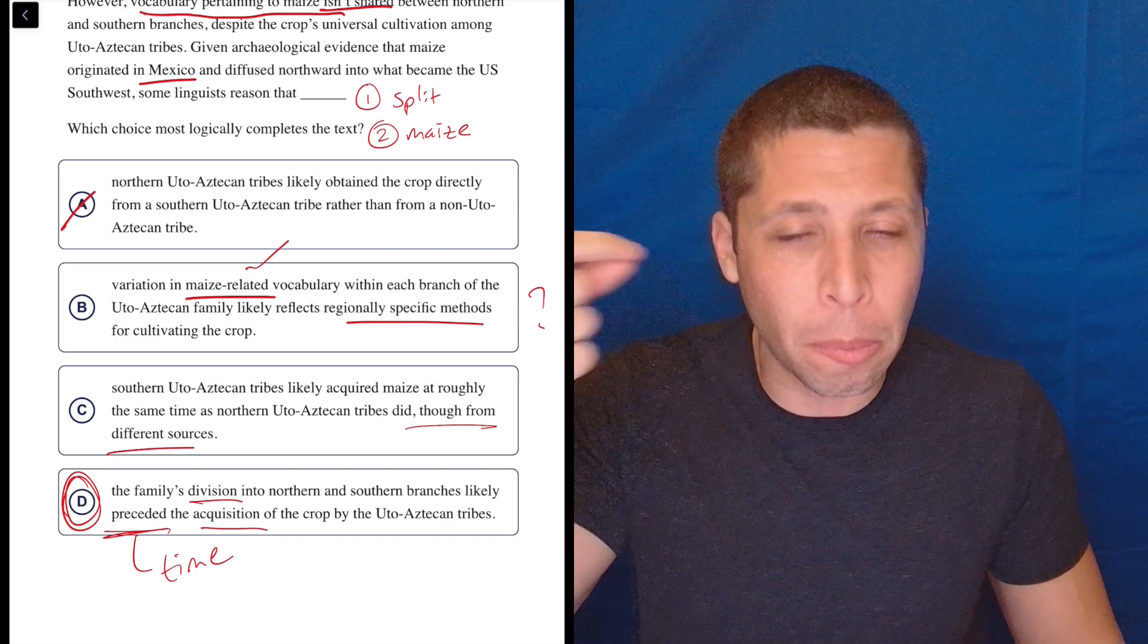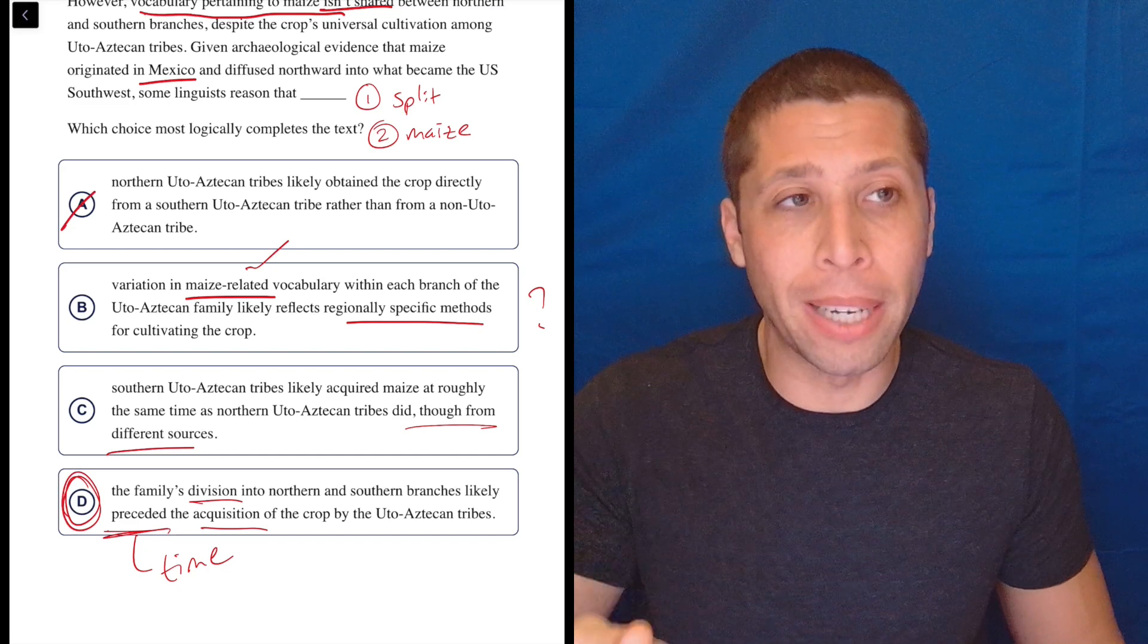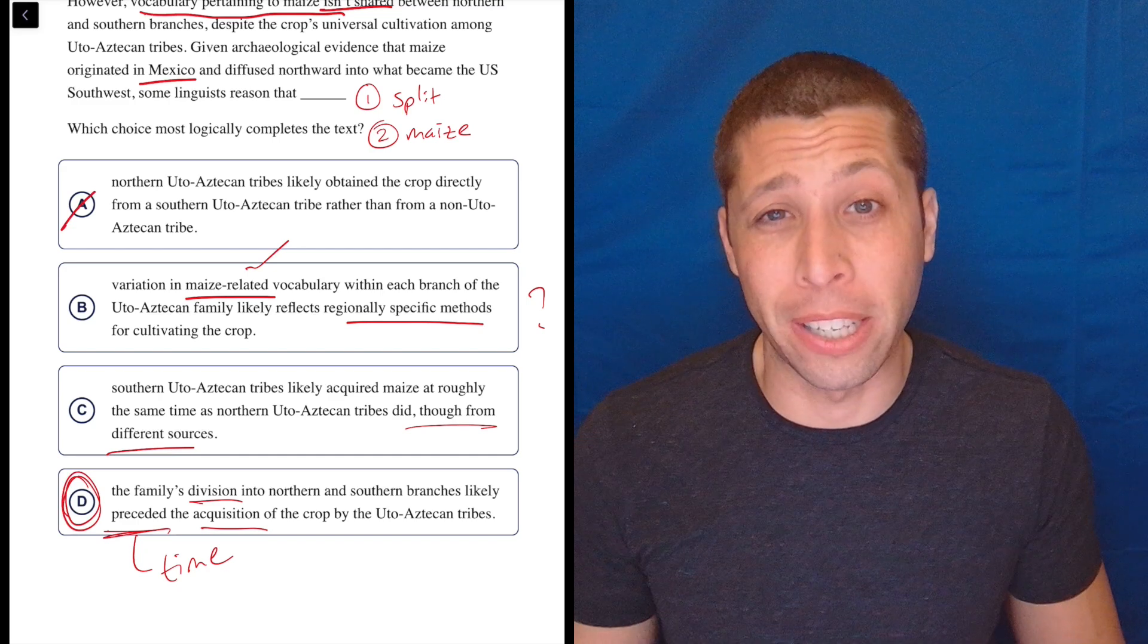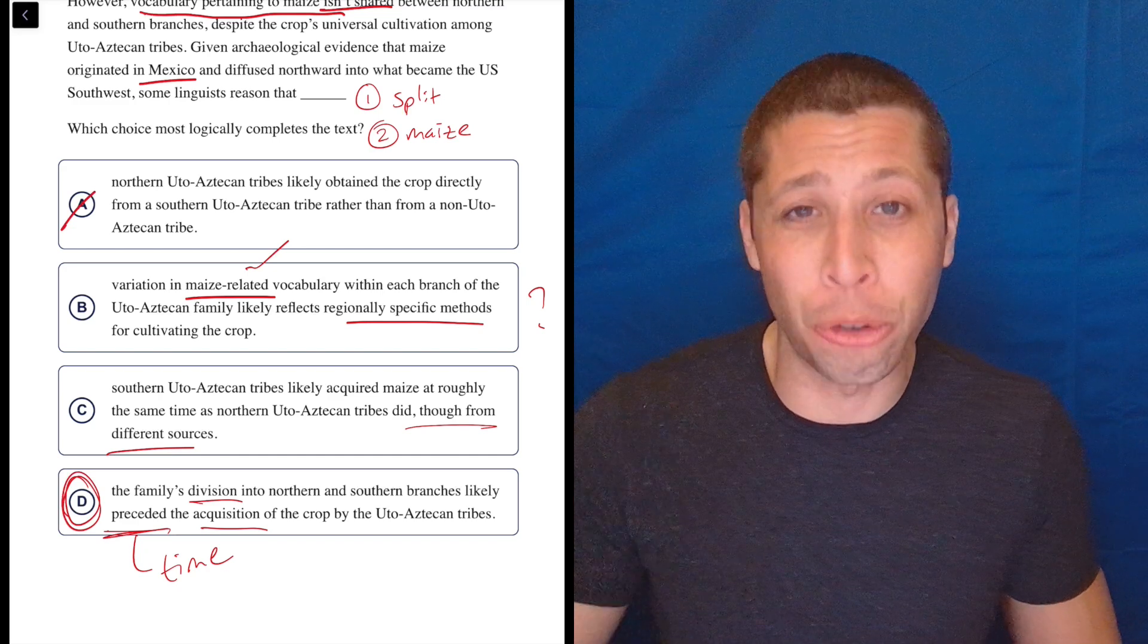But they did talk about it dividing into two branches and them acquiring the crop. So, we're kind of just relating back to different events that were talked about in the passage, but now we're putting them in sequence in a way that explains this difference. So, we are doing a little bit of logic, a little bit of thinking, a little bit of inference, but it's not that much. And that's always the best answer for these. The least amount of thinking you can do is usually the best answer.